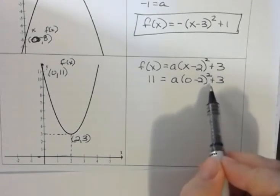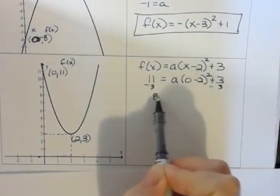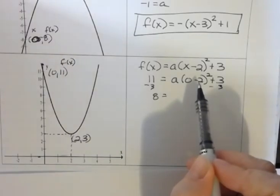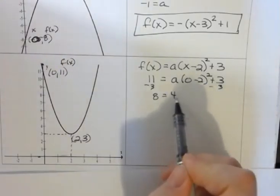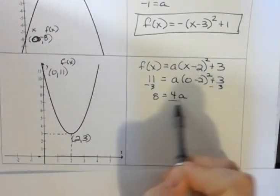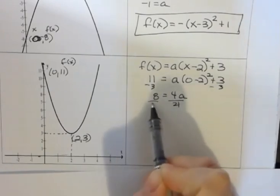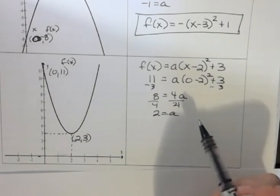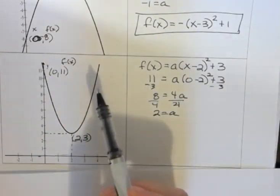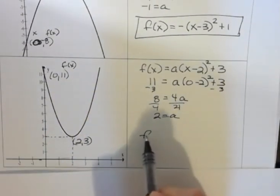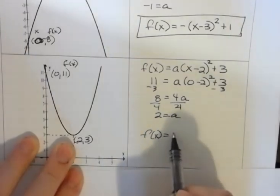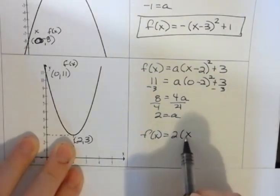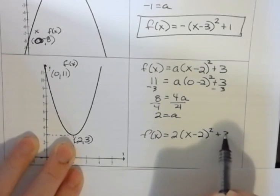I'm going to subtract 3 from both sides and get 8. Negative 2 squared is positive 4. So I get 4a. And I divide both sides by 4. And I get 2. Should it be positive? Well, yes, because this is opening up. I should have a positive a there. So my function equation is 2 times x minus 2 squared plus 3.